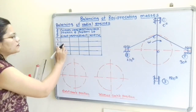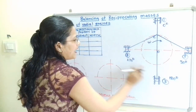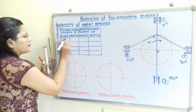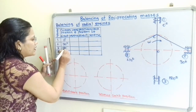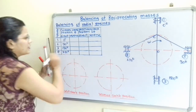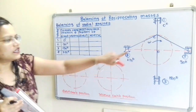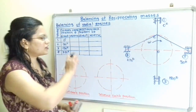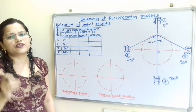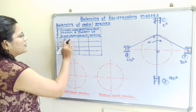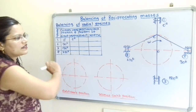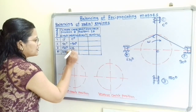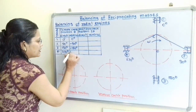For the Direct Crank, angles are in the direction of crank rotation: cylinder 1 at 0°, cylinder 2 at 90°, cylinder 3 at 180°, cylinder 4 at 270°. For the Reverse Crank, using the anticlockwise (negative) direction: cylinder 1 at 0°, cylinder 2 at −90°, cylinder 3 at −180°, and cylinder 4 at −270°.